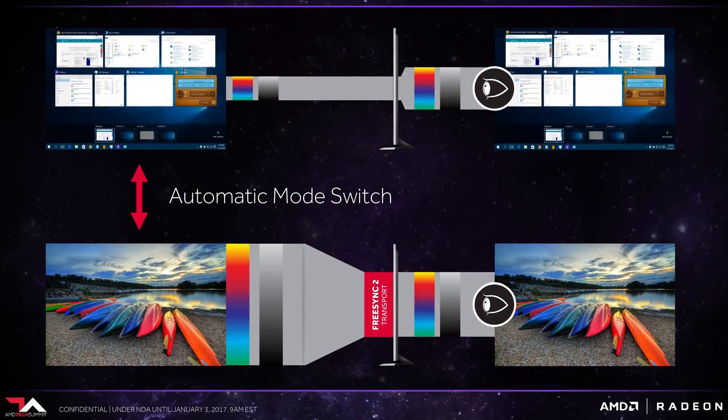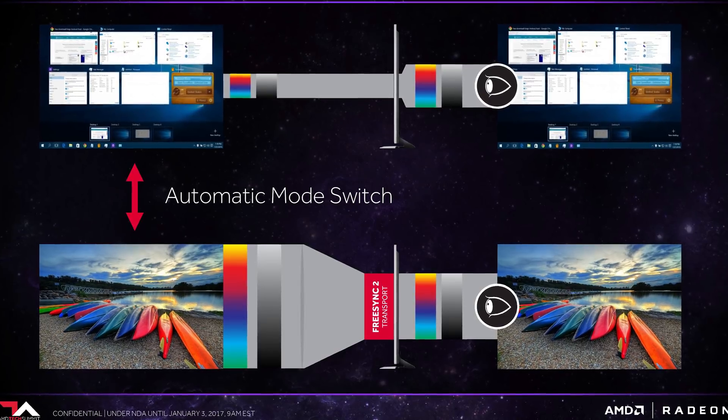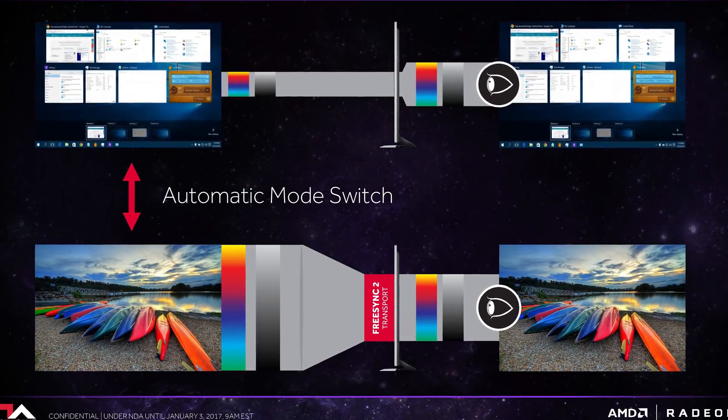One of the features AMD mentioned as part of their HDR implementation was automatic switching between HDR and SDR modes, so you could game using the full HDR capabilities of your display while returning to a comfortable SDR for desktop apps. Unfortunately, this too doesn't seem to be functional right now. Instead, FreeSync 2 makes use of Windows' standard HDR implementation, which doesn't handle the HDR to SDR transition too well.